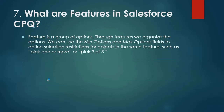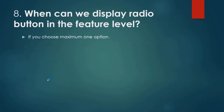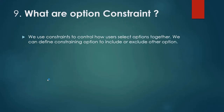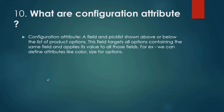What are features in Salesforce CPQ? Features are a group of options. Through features we organize the options. We can use the min options and max option fields to define selection restrictions for objects in the same feature — such as 'pick one' or 'pick three to five'. When can we display a radio button at the feature level? If we choose a maximum of one option. What are option constraints? We use constraints to control how users select options together. We can define options to include or exclude other options. What are configuration attributes? A configuration attribute is a field and a picklist shown above or below the list of product options. This field targets all options containing the same field or applies all those field values — for example, we can define attributes like color or size for options.